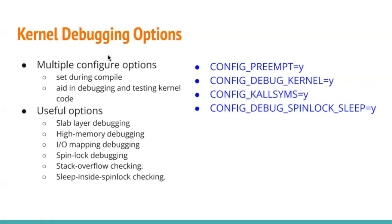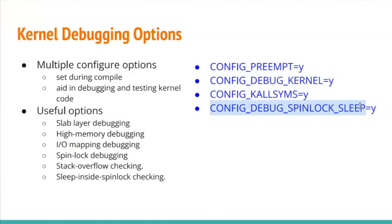Many debugging features can be enabled with kernel build configs. These include slab layer debugging, high memory debugging, I/O mapping debugging, and spinlock debugging. We can enable these configs for different types of debugging accordingly, and finally we can print more details of the kernel file execution.